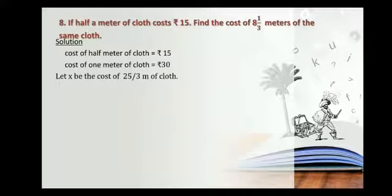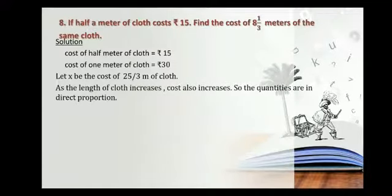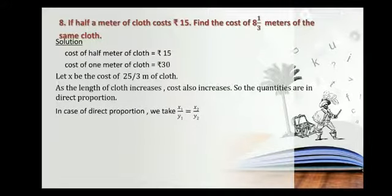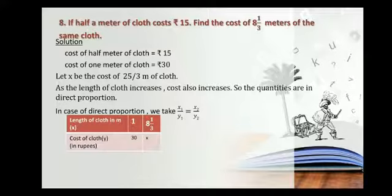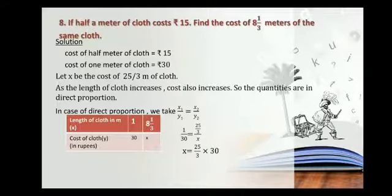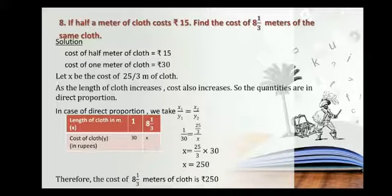We need the cost of 25 by 3 metres. Let X be the cost of 25 by 3 metres of cloth. As the length increases, cost also increases, so the quantities are in direct proportion. We take X as length and Y as cost. For 1 metre it is 30 rupees, and for 8 and one-third metres it is X. Substituting: 1 by 30 is equal to 25 by 3 by X. Cross multiplying: X is equal to 25 by 3 into 30. Dividing 30 by 3 gives 10; 25 into 10 is 250. So the cost of 8 and one-third metres of cloth is 250 rupees.